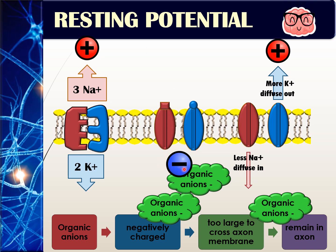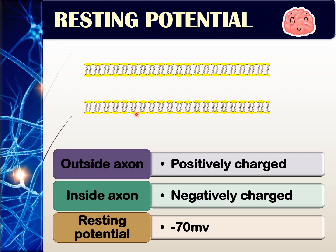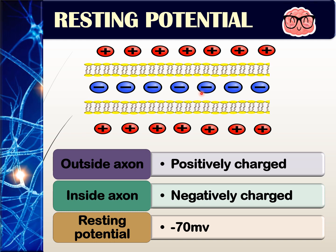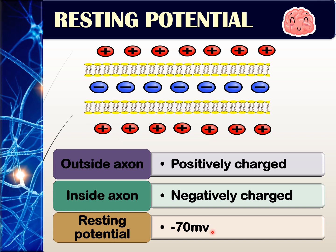Outside the axon is positive due to the accumulation of sodium and potassium ions from the sodium-potassium pump and potassium ion channels. Inside the axon is negatively charged due to fewer potassium ions, fewer sodium ions, and a large amount of negatively charged organic anions. When we measure the value inside the axon, that is the resting potential of negative 70 millivolts.